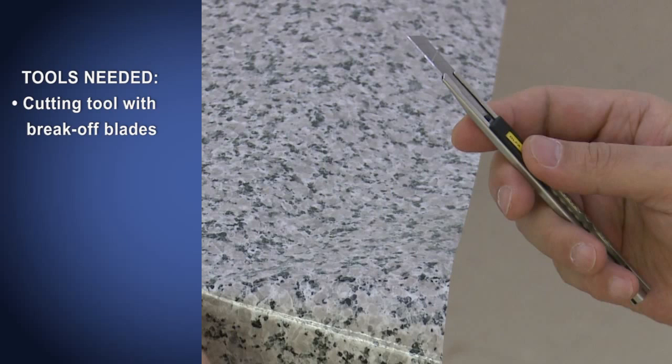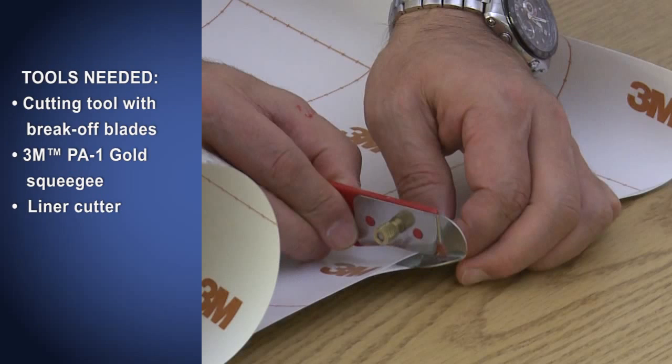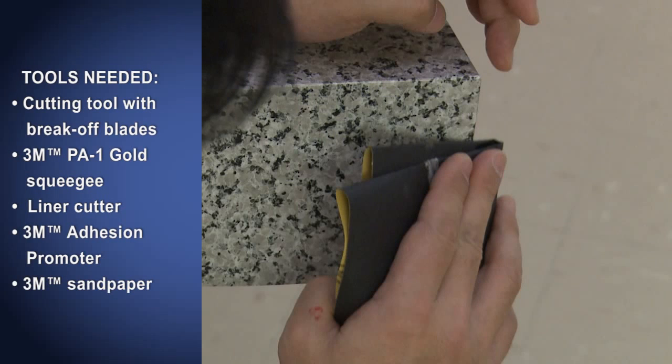You will need these tools: a cutting tool with break off blades, a 3M brand applicator PA1 gold squeegee. Protect one edge with the soft loop side of 3M's hook and loop tape or a 3M brand low friction sleeve PA1 or soft cotton cloth wrapped and taped onto the squeegee. A liner cutter. This tool has a guide under the blade that slips between the film and liner so you cut only through the liner. One option is Seam Buster, a product from Advanced Equipment Manufacturing available online and at many major hardware and home improvement stores. 3M brand adhesion promoter. 3M's Primer 94 is a solvent based product, and 3M brand sandpaper.